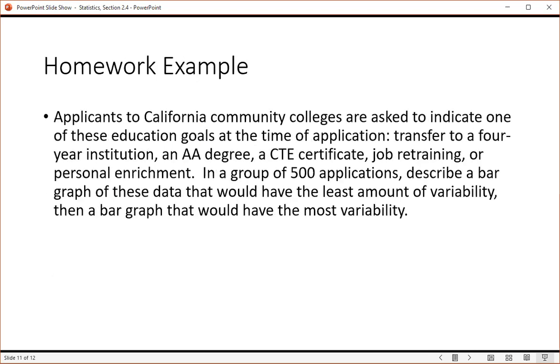Let's look at a homework example. Applicants to California community colleges are asked to indicate one of these educational goals at the time of application: Transfer to a four-year institution, acquire an AA degree, acquire a CTE certificate, job retraining, or just personal enrichment. In a group of 500 applications, describe a bar graph of this data that would have the least amount of variability and then a bar graph that would have the most amount of variability.